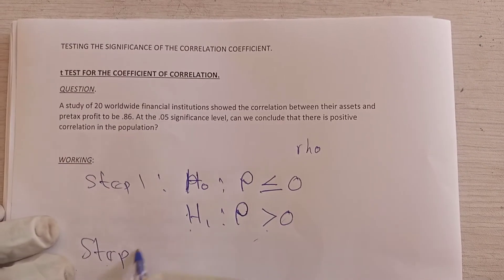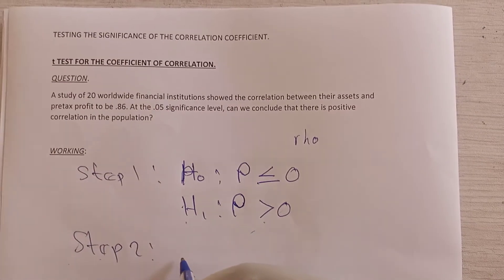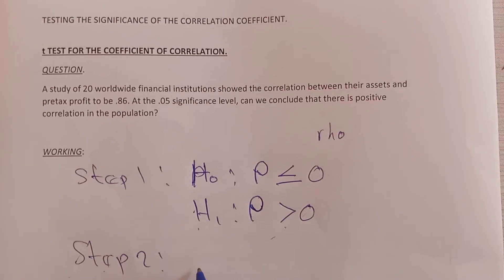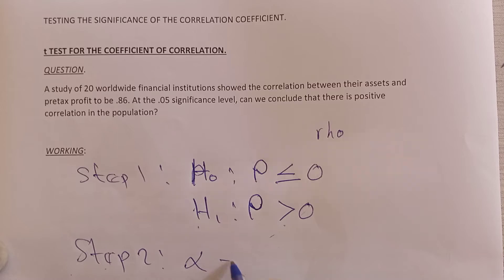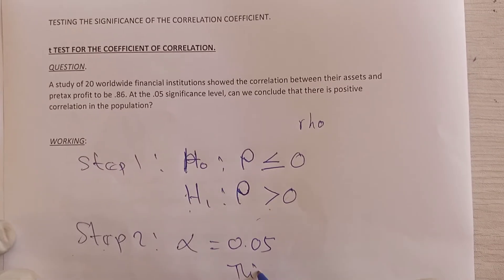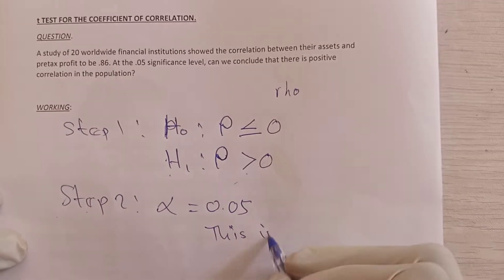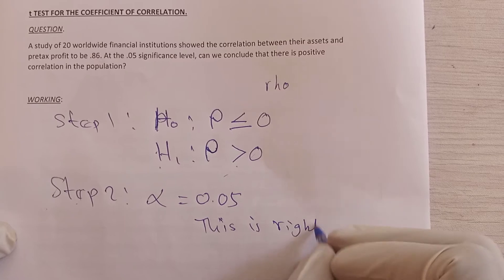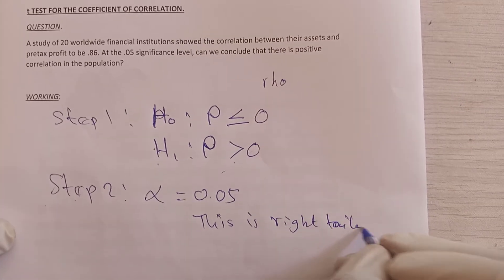So step 2. In step 2, you are going to choose a level of significance. But here you've been given, so you only state what has been given to you at 0.05. And this is a right-tailed test. When you have a greater than sign, it's a right-tailed test.